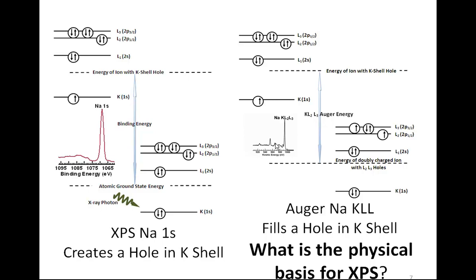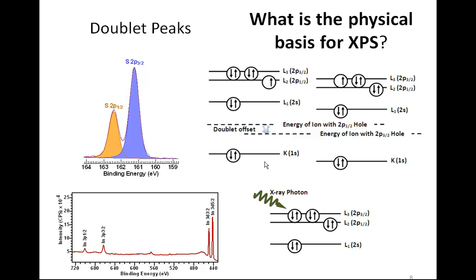The explanation for Auger lines was described using an atom of low mass with an S orbital. Sodium 1s was chosen because it is one of the simplest forms of the photoemission process — low atomic weight and an S orbital — and the symmetry of the electronic configuration allows a single peak to be seen for the photoemission process. This is not always the case.